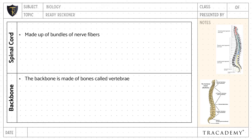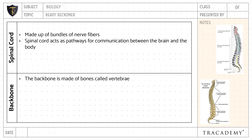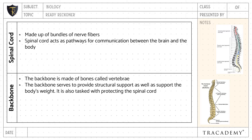The spinal cord acts as a pathway for communication between the brain and the body. The backbone serves to provide structural support as well as support the weight of the body.